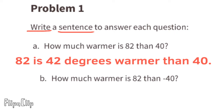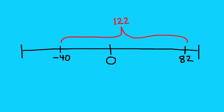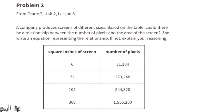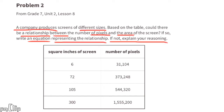Part b: how much warmer is 82 than negative 40? You can see that there are 122 units between negative 40 and 82. 82 is 122 degrees warmer than negative 40.